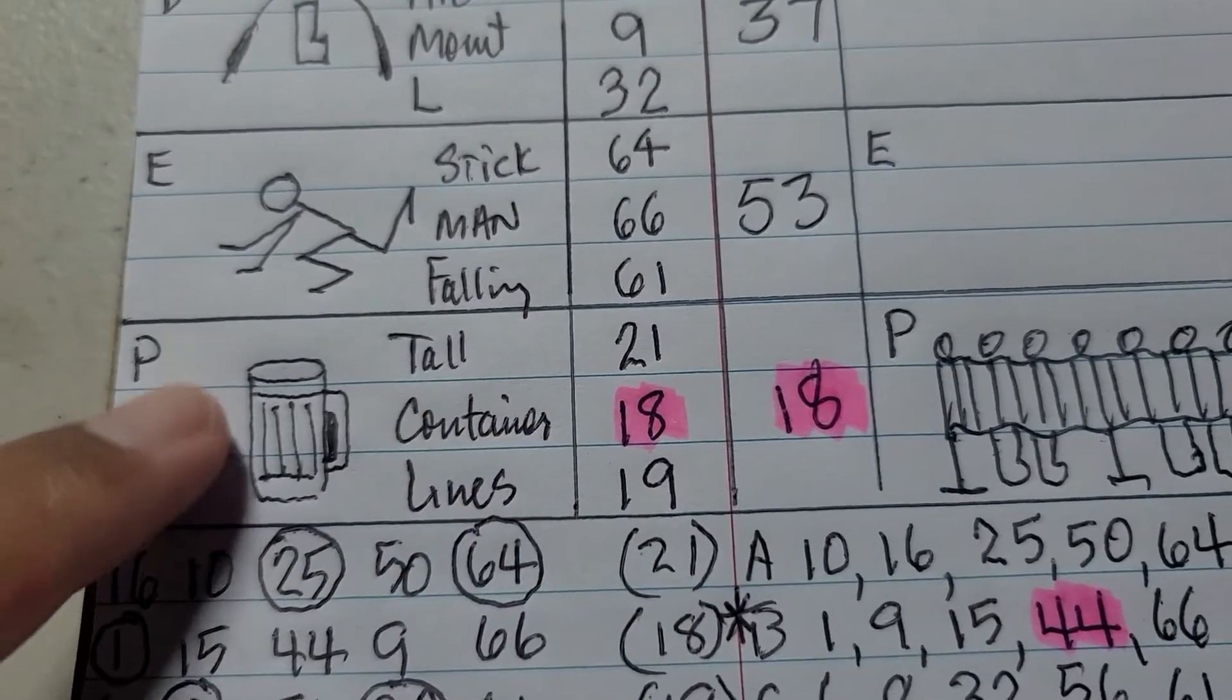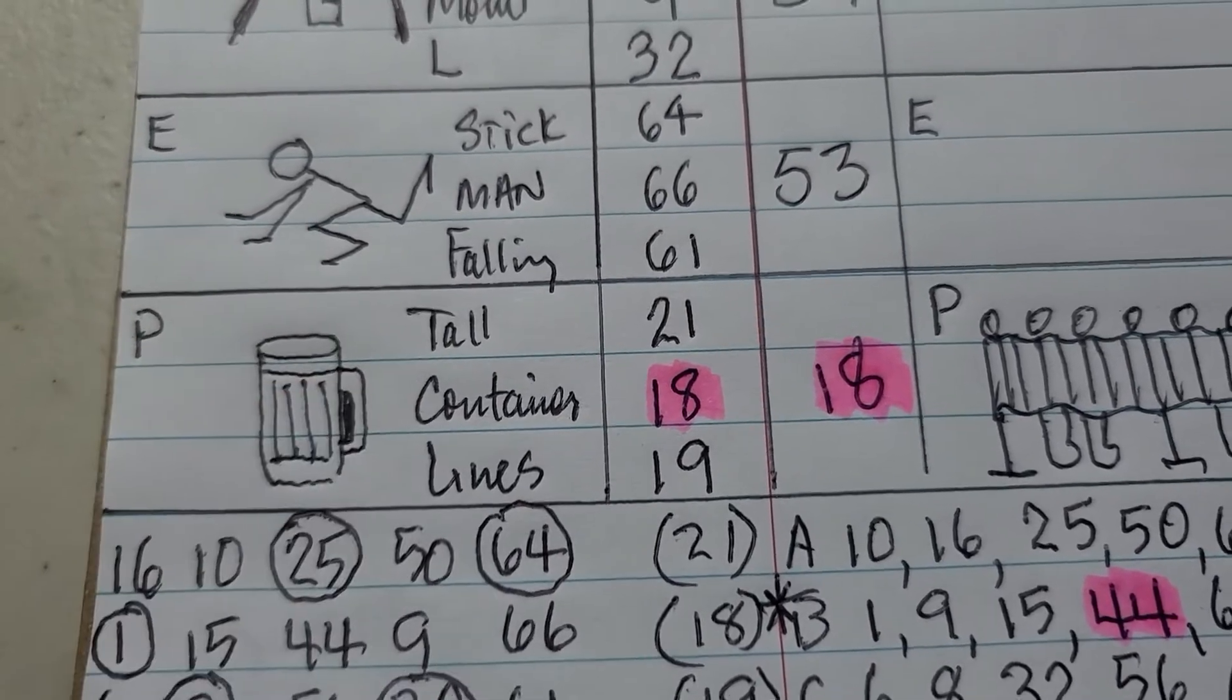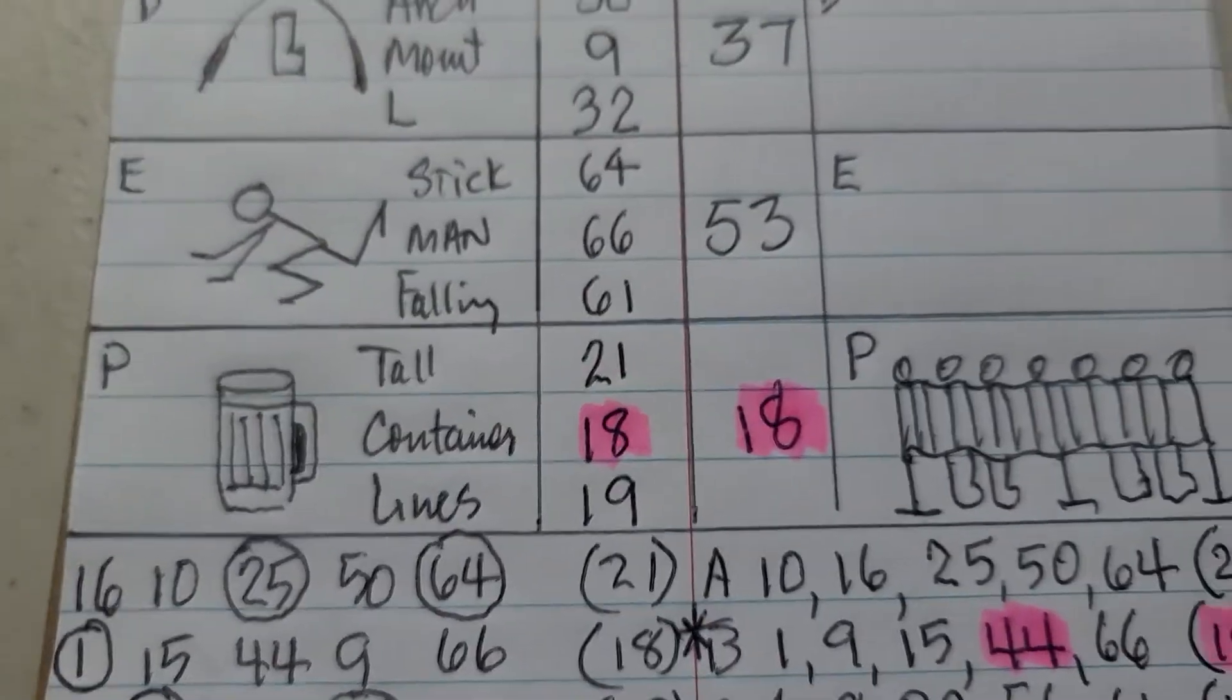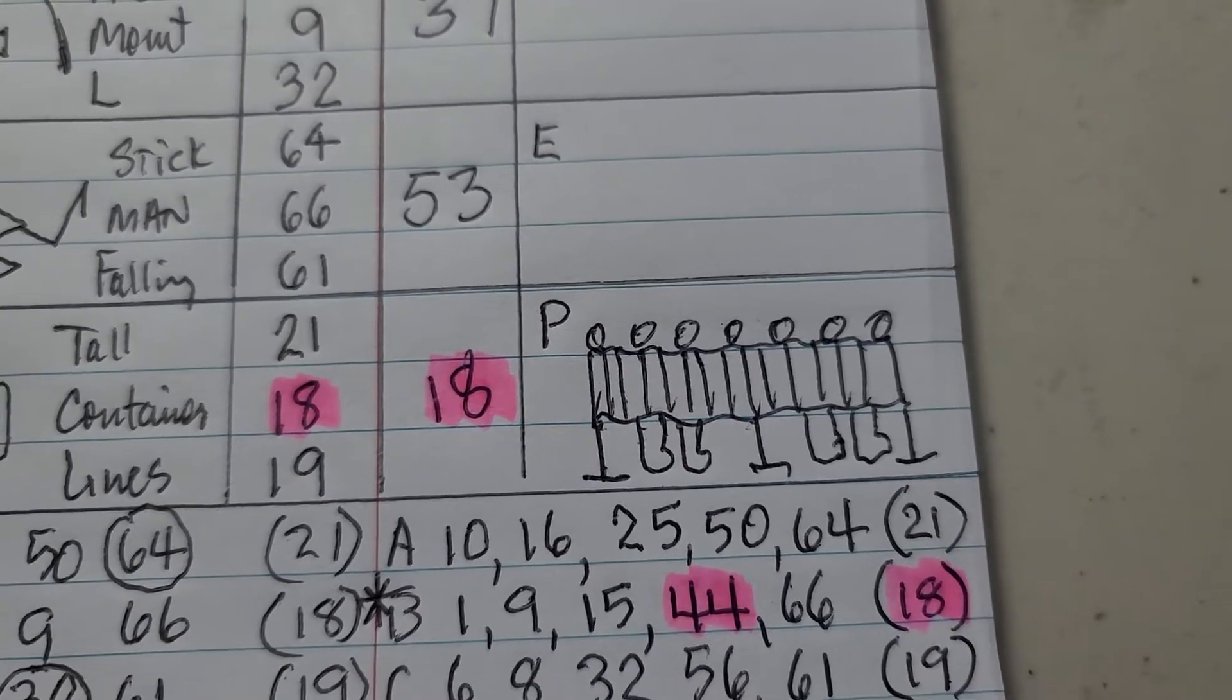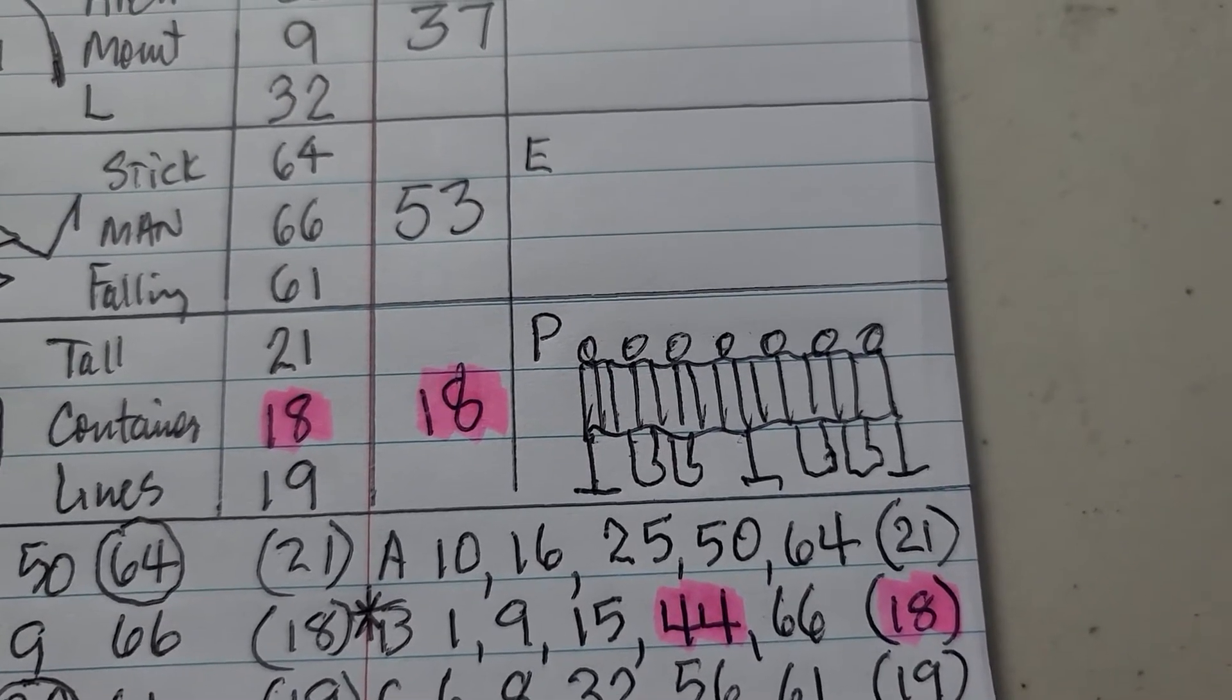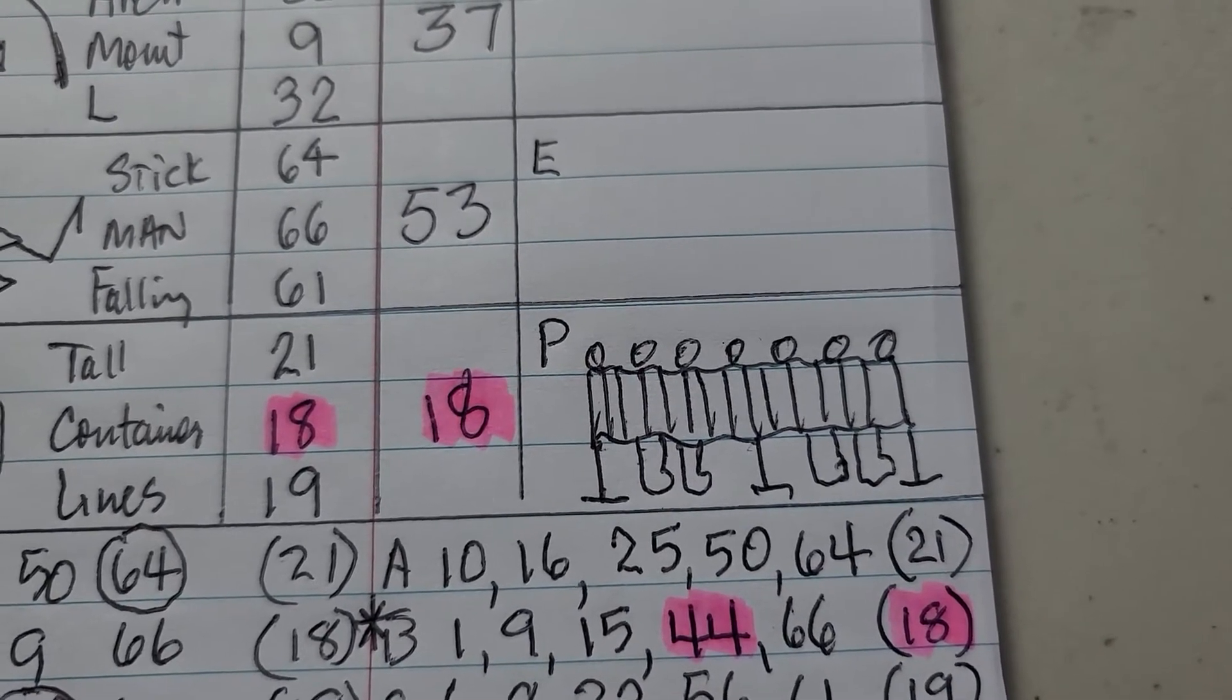But if you take a look at the beer mug, there's vertical lines coming down, and these other sketch that has a lot of vertical lines is the voting booth, which is number 18. So that's why I added 18 as a secondary read, and it hit.